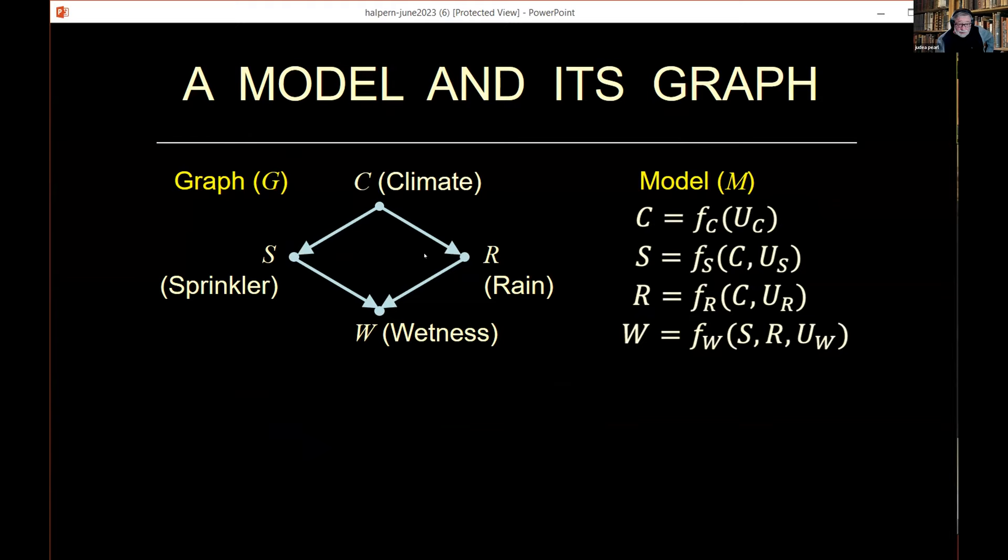Here we see that rain is defined only by climate. C is an argument in the function that defines the status of rain. Similarly, wetness is the argument of the function that defines the state of variable wetness. Climate does not enter as an argument in that function. Therefore, when we plot the graph, we do not include C as the parent of W. For every collection of functions, you can easily draw the graph that defines who is an argument of whom. That's the causal graph.